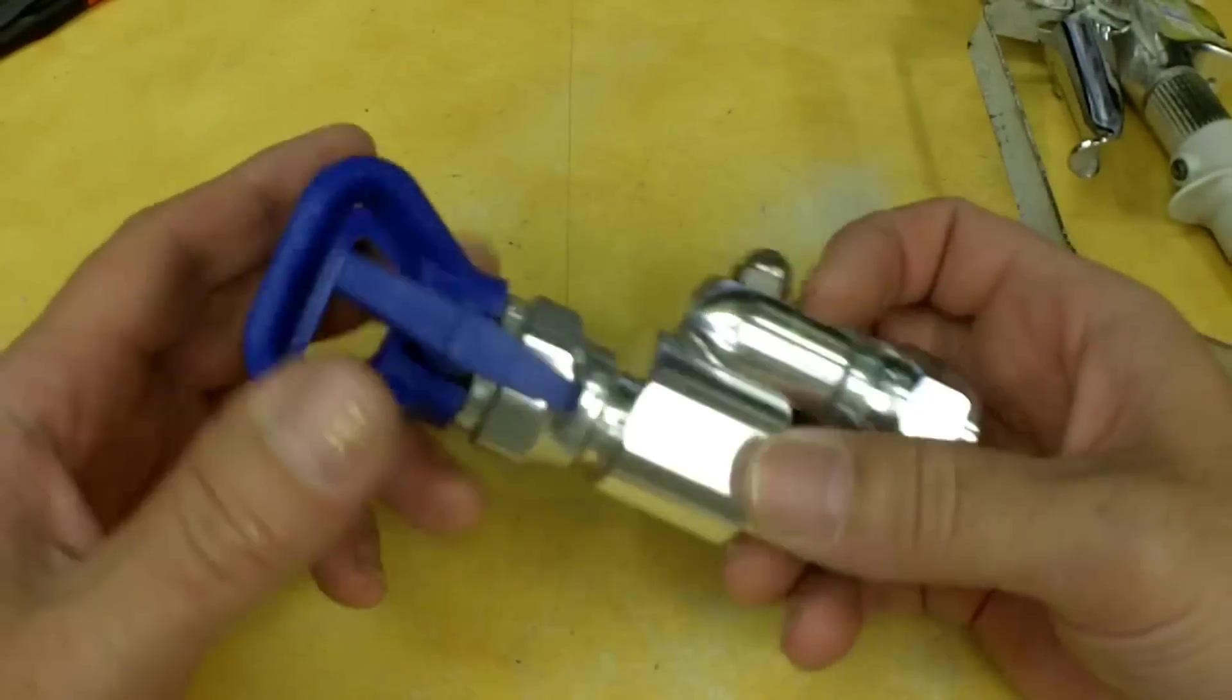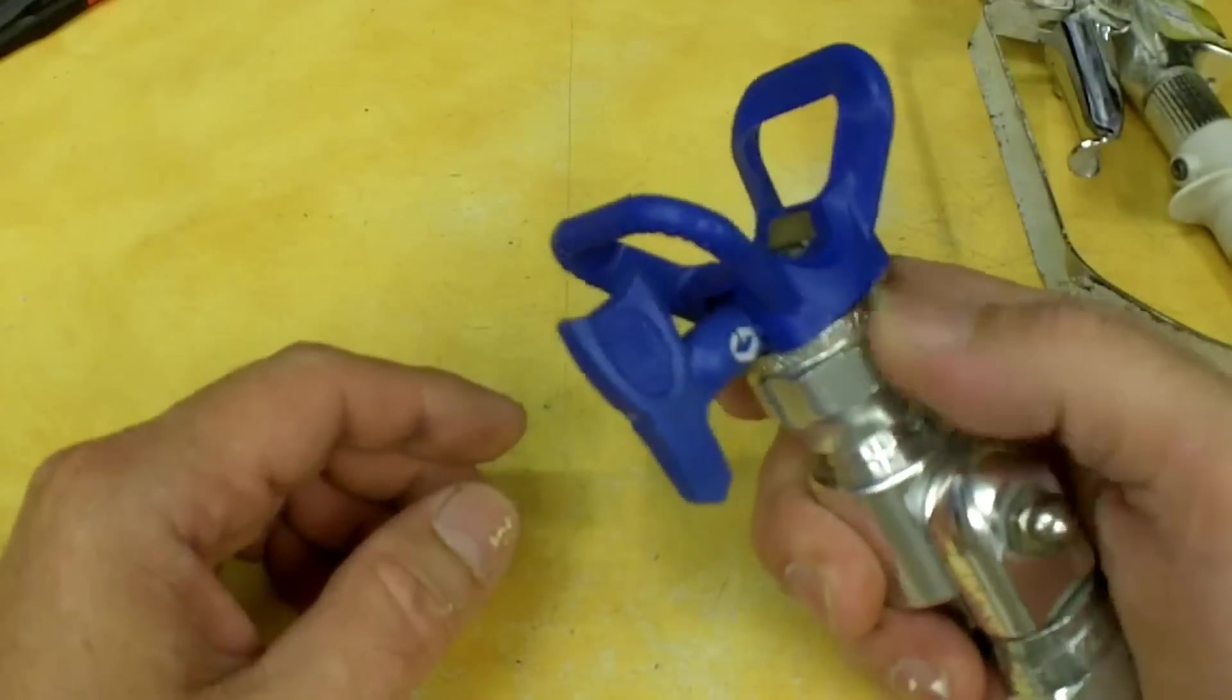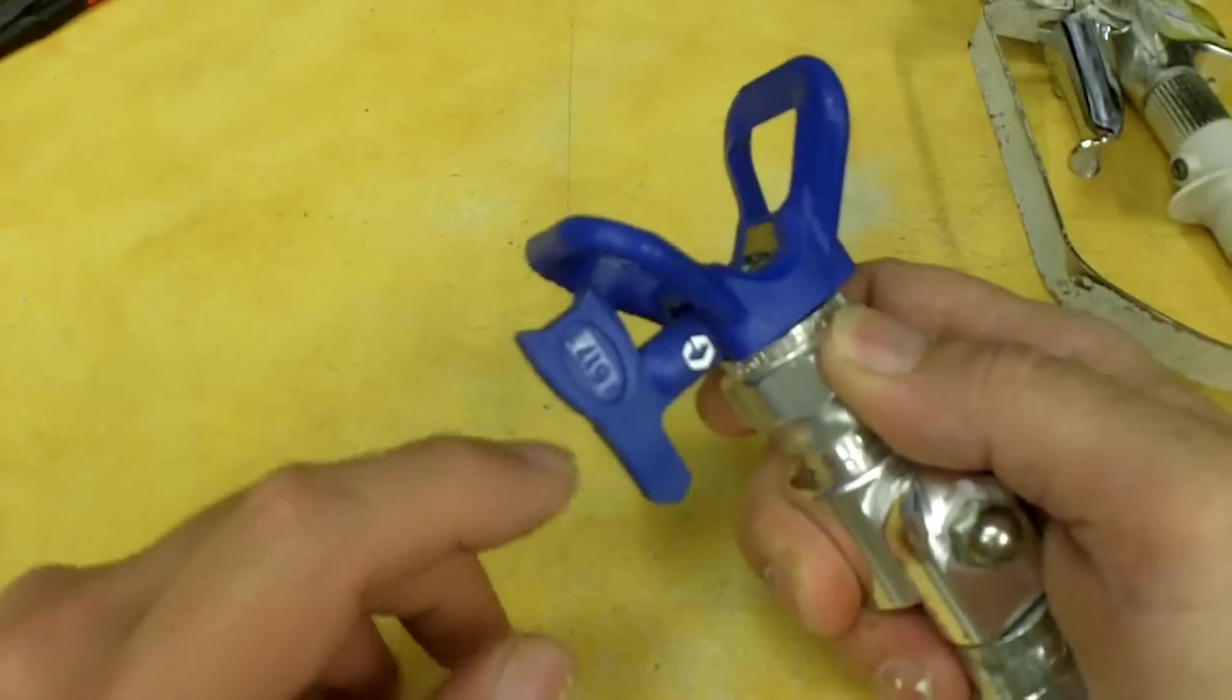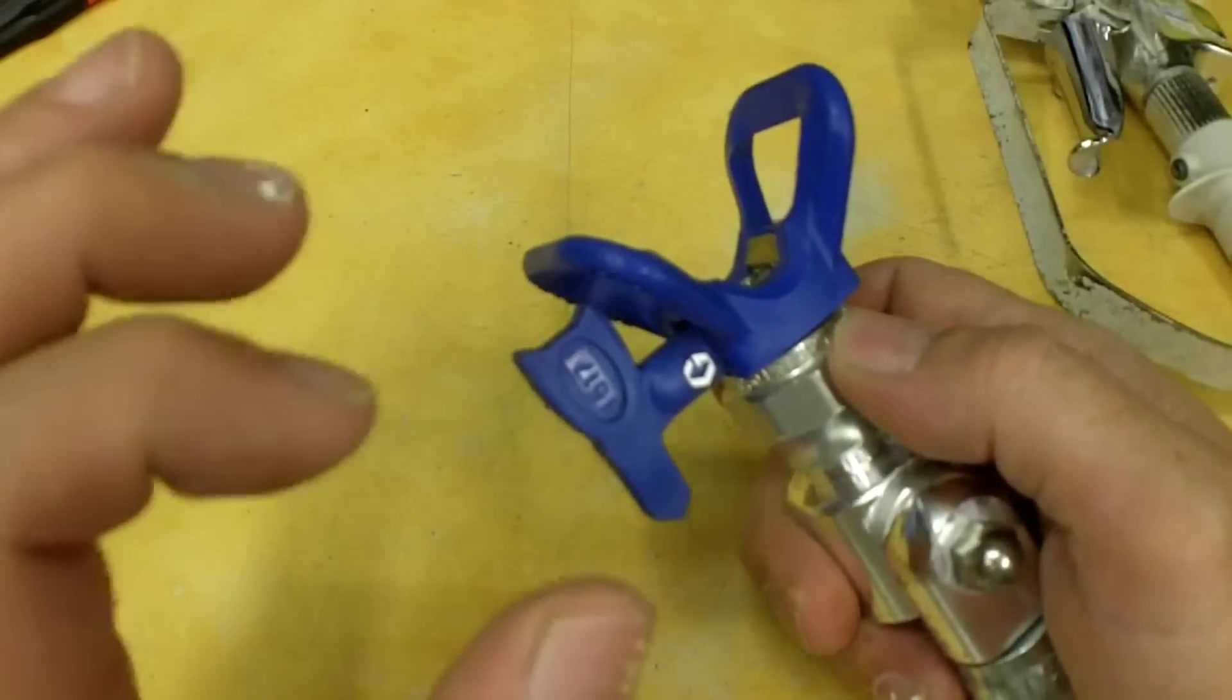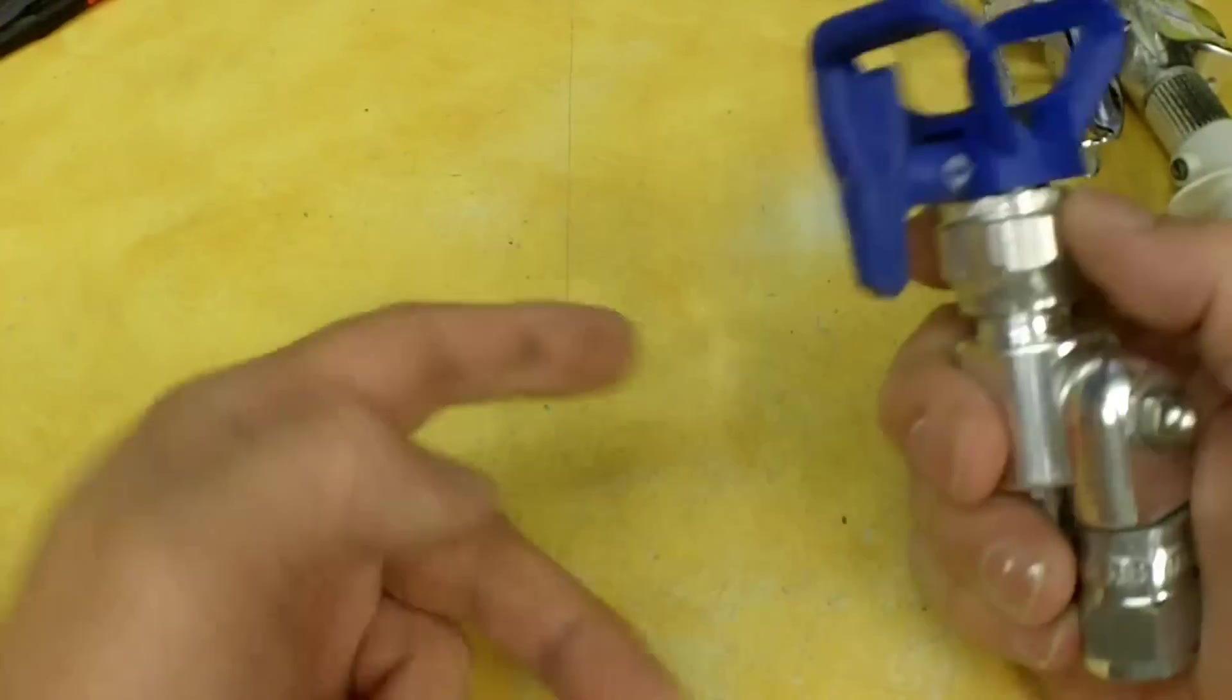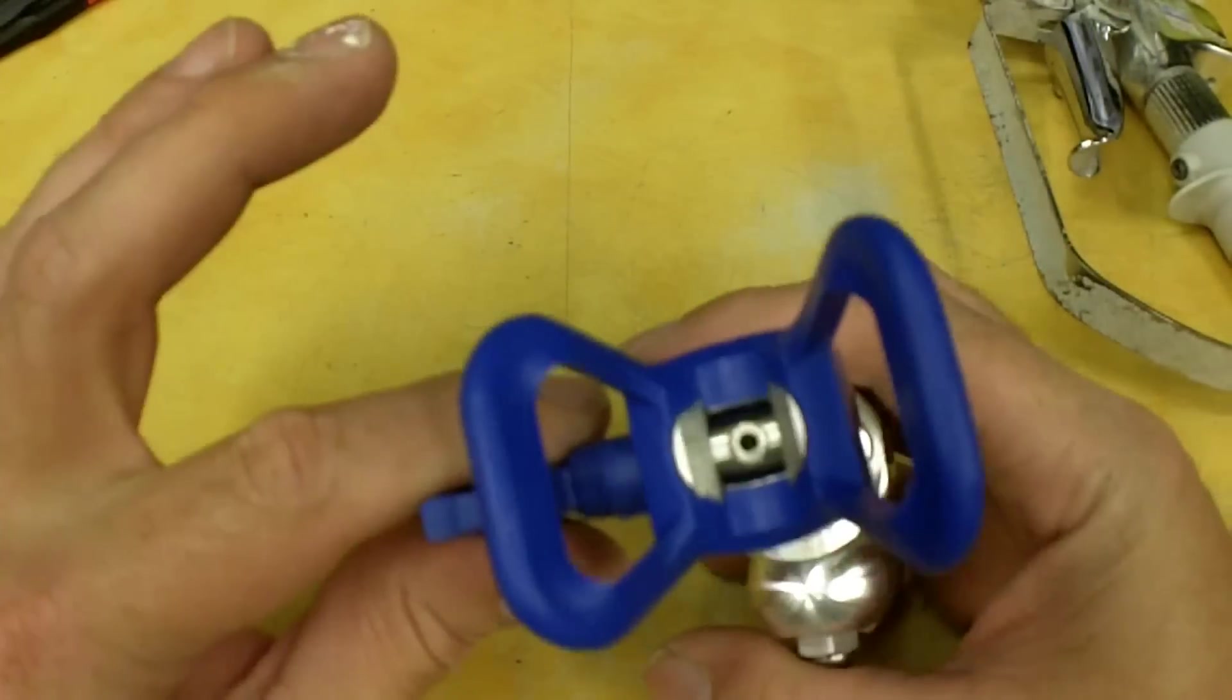Another thing I did notice is I've not ever used any of the RackX tips, and this one came with a 517, and I could use a lower pressure to atomize the paint and get rid of my tailing than I can with the SprayTek tips that I have been buying.